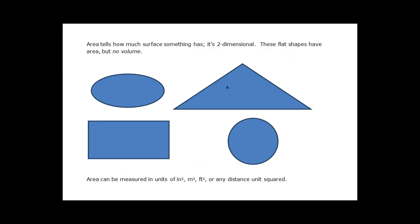Area tells how much surface something has. It's two-dimensional. These flat shapes have area but no volume. Area can be measured in units of square inches, square meters, square feet, or any distance unit squared.